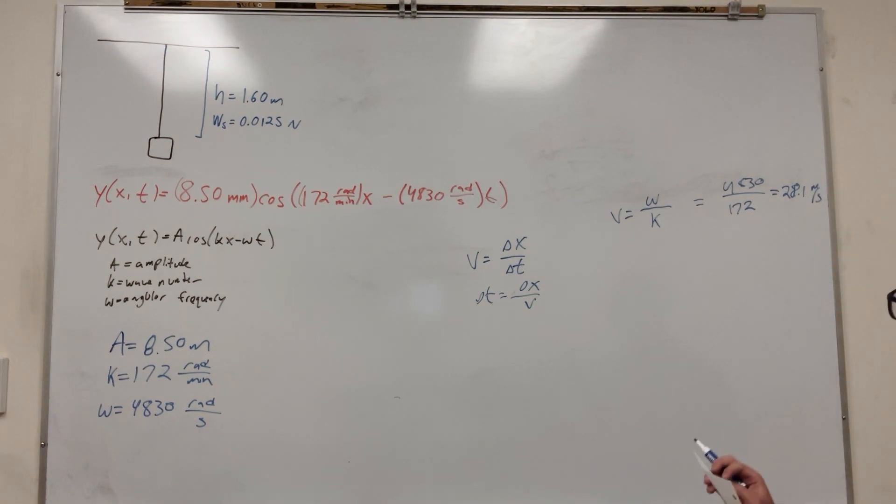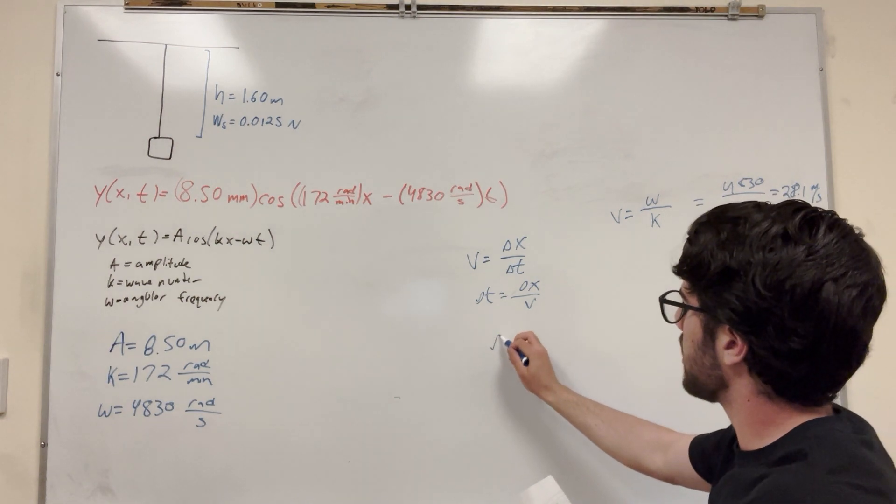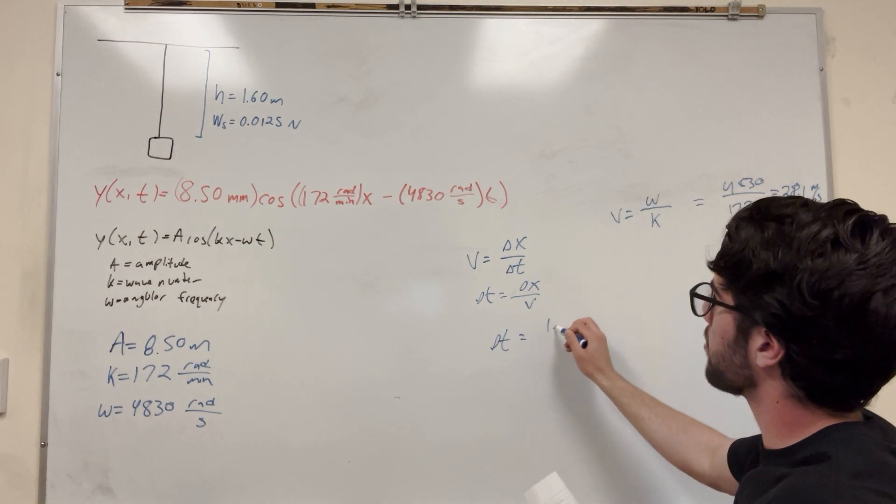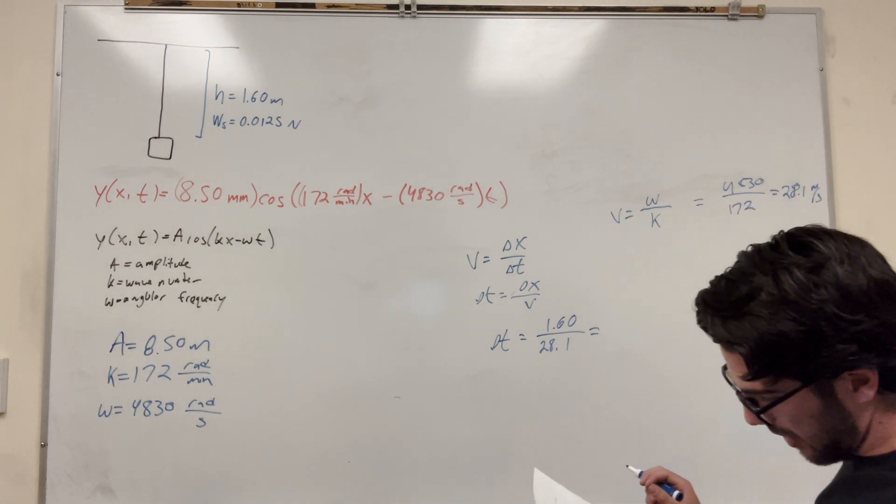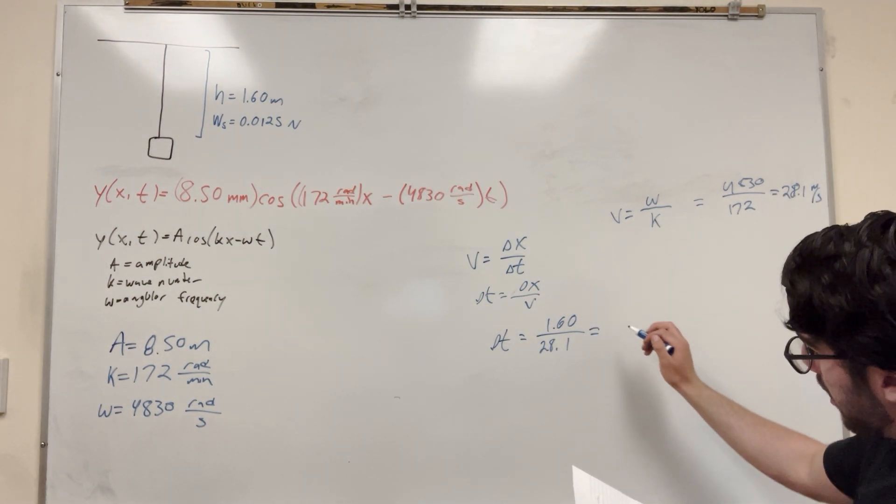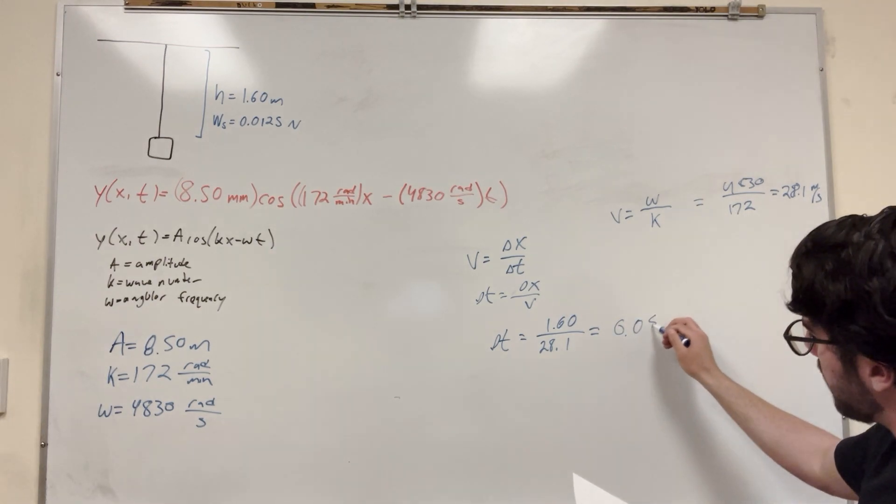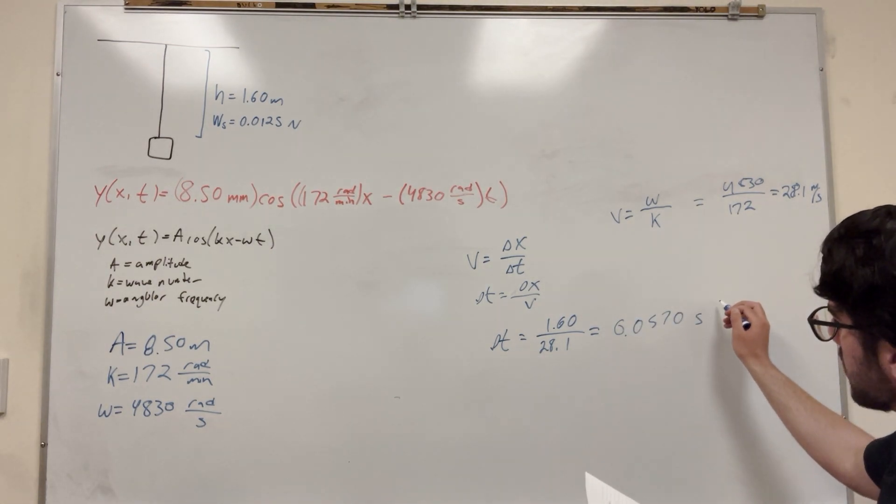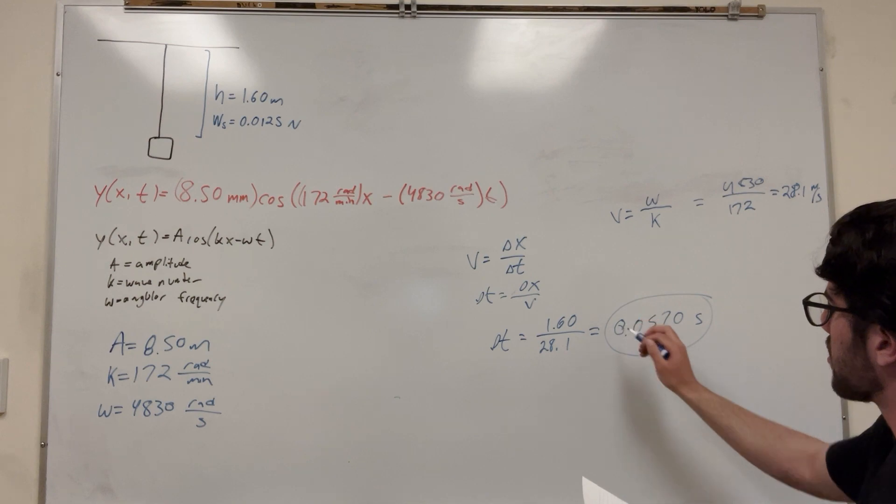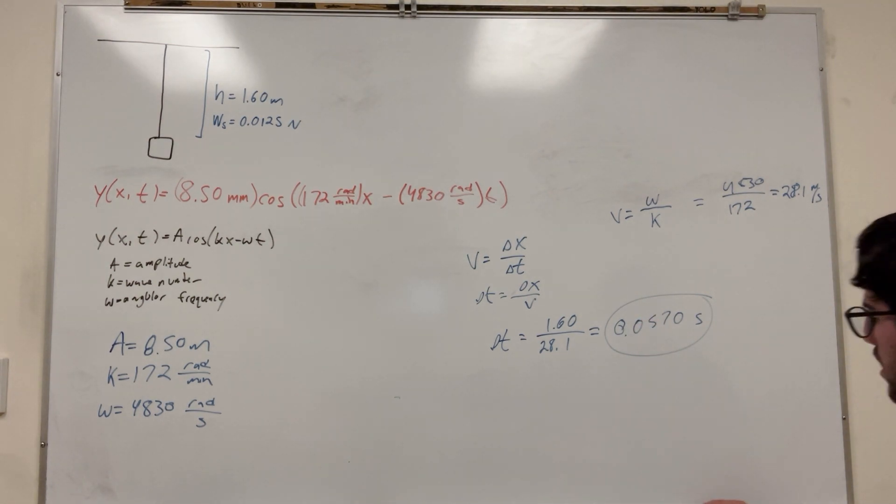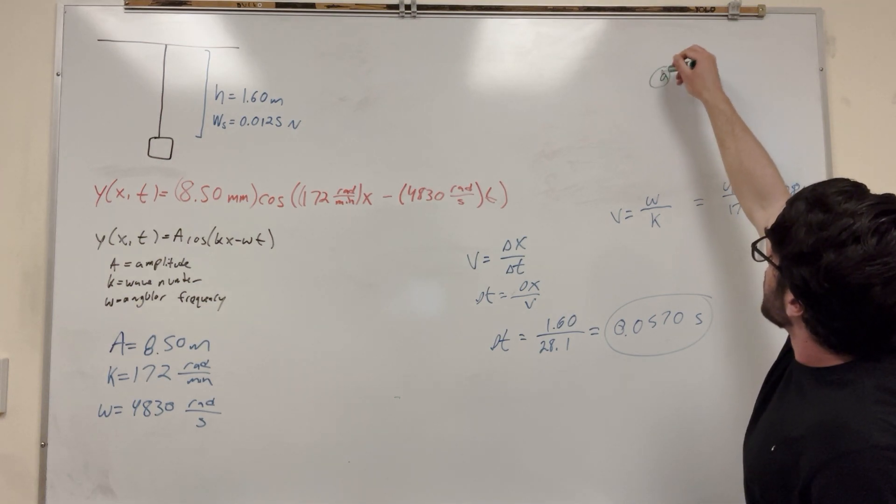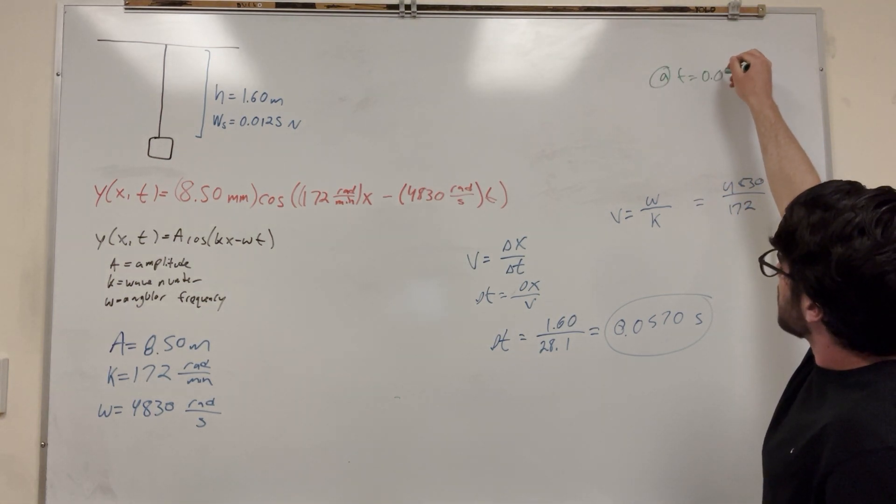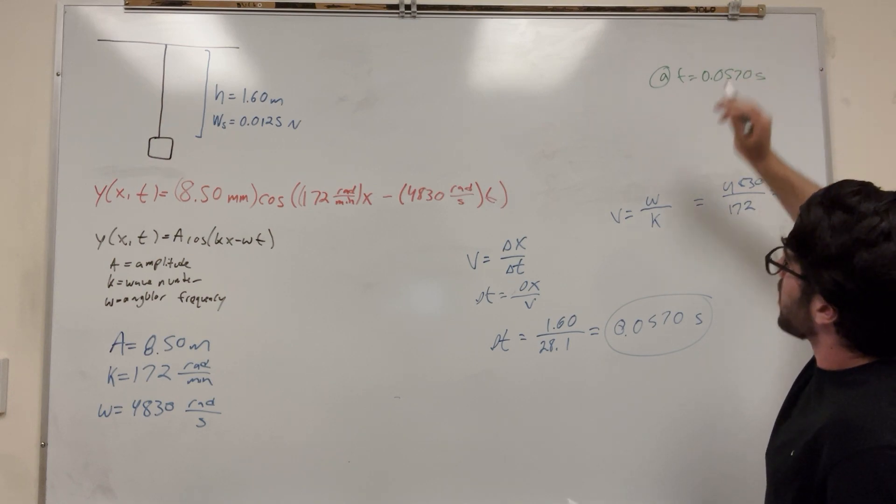So that's our velocity. So we can just go back to here, Δt is equal to change in position, 1.60 divided by 28.1, and that's going to give you 0.0570 seconds. So that's part A, 0.0570 seconds. So let me write that somewhere. I'll write it up here. A, t is equal to 0.0570 seconds. That's part A.